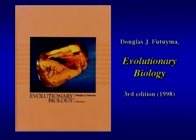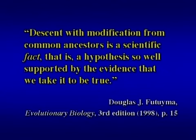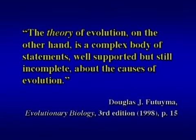In another textbook — the one I used as a graduate student at UC Berkeley — a text devoted entirely to evolutionary biology for upper division and graduate students, Doug Futuyma wrote: 'Descent with modification from common ancestors is a scientific fact — that is, a hypothesis so well supported by the evidence that we take it to be true. The theory of evolution, on the other hand, is a complex body of statements, well supported but still incomplete, about the causes of evolution, such as natural selection and mutation.'